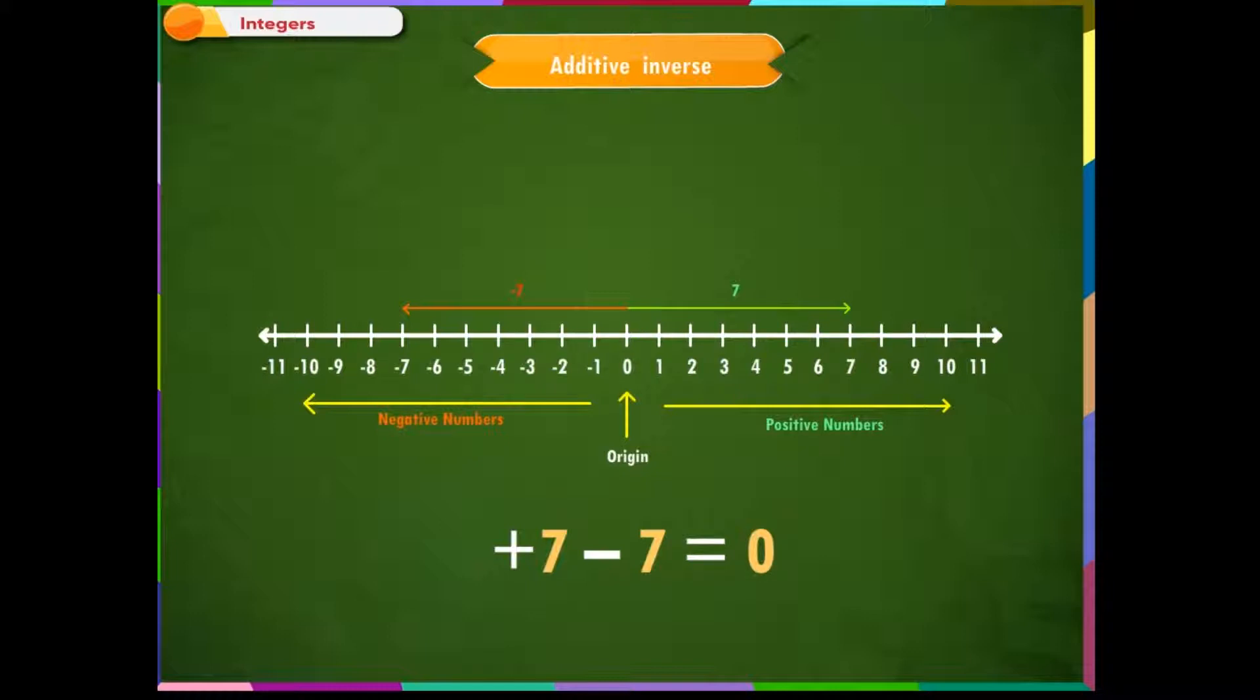Let us see another example. Adding opposites minus 3 and 3. The arrow is at minus 3. To add plus 3, we move 3 steps towards right. 1, 2 and 3. We reach at 0. Thus, minus 3 plus 3 is equal to 0.